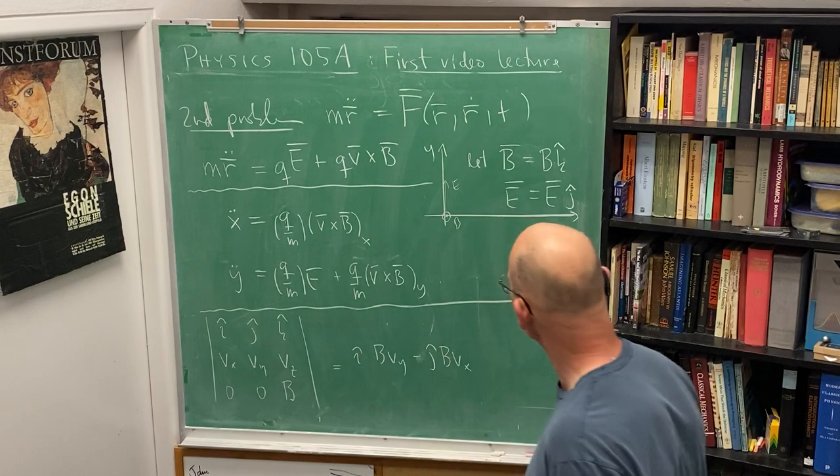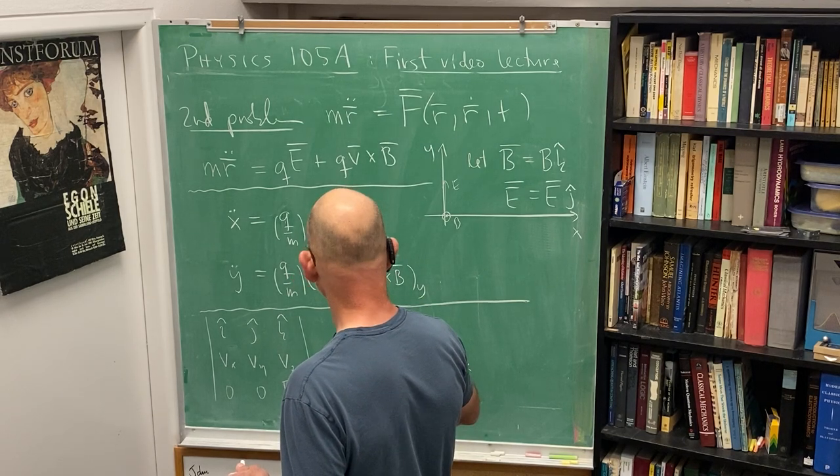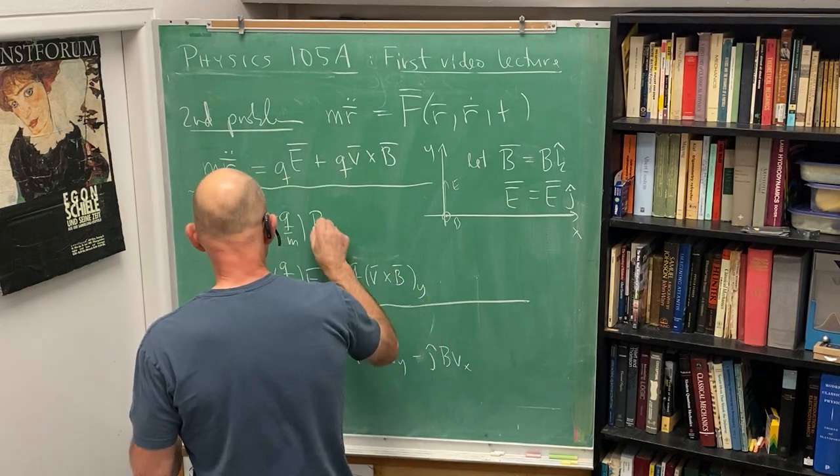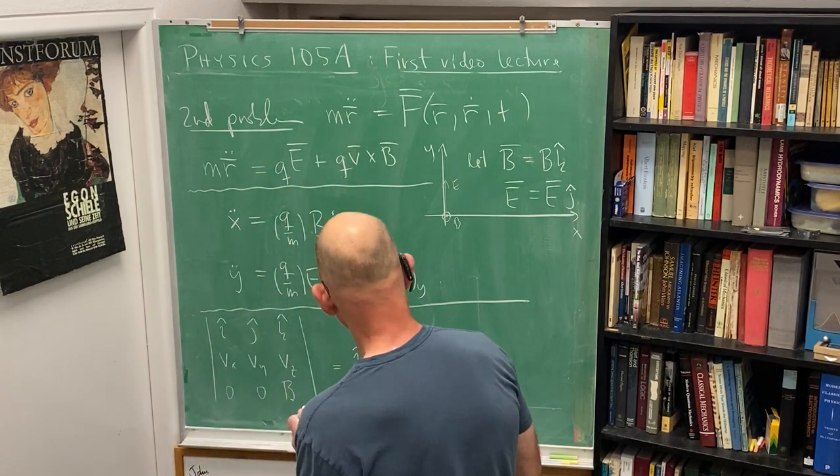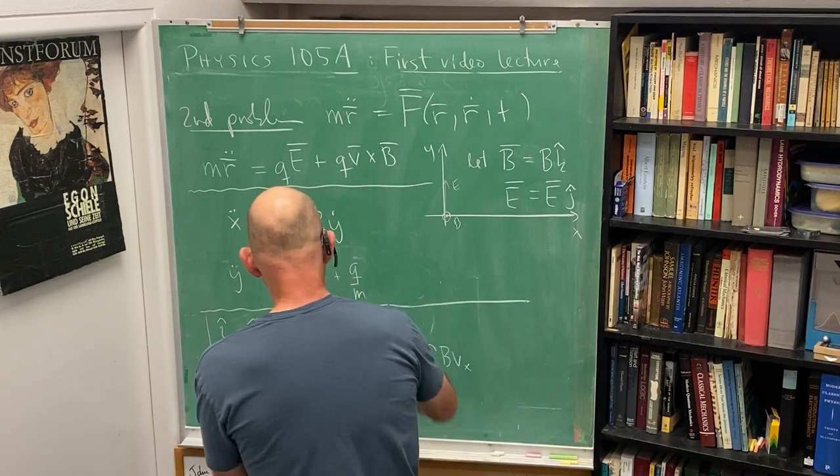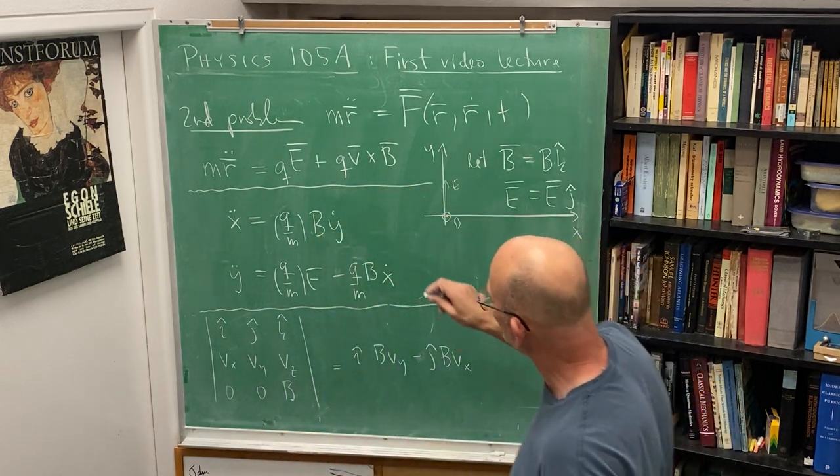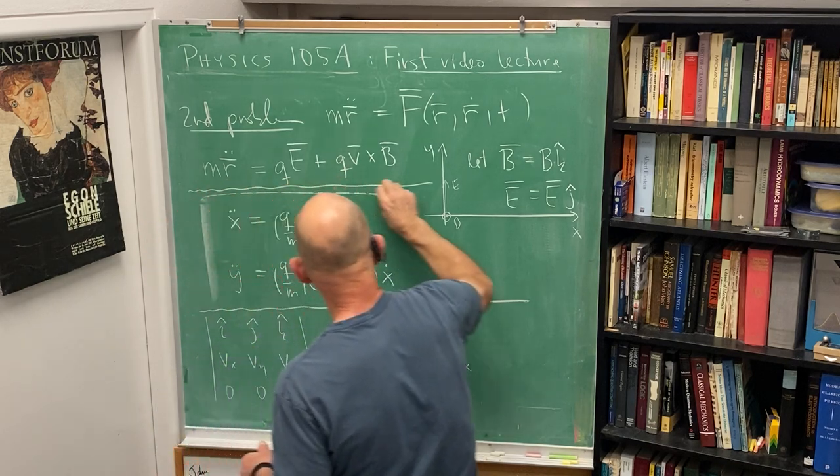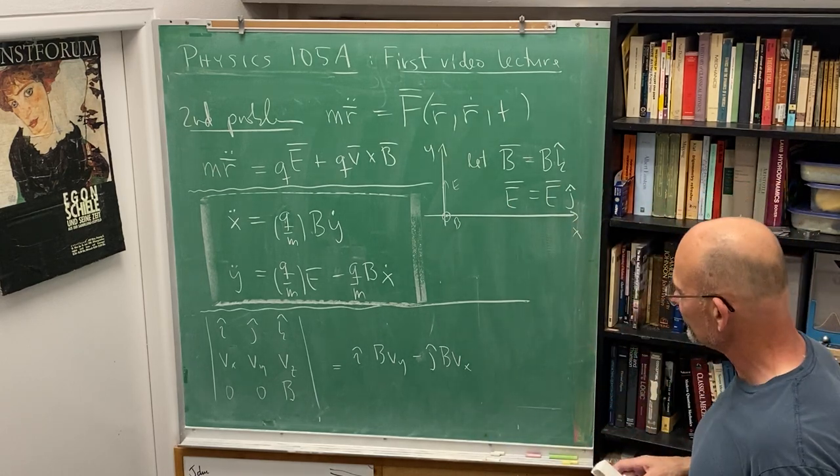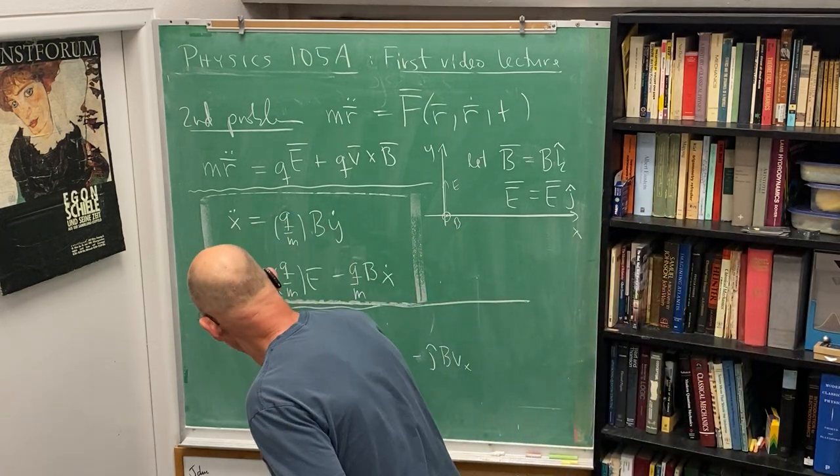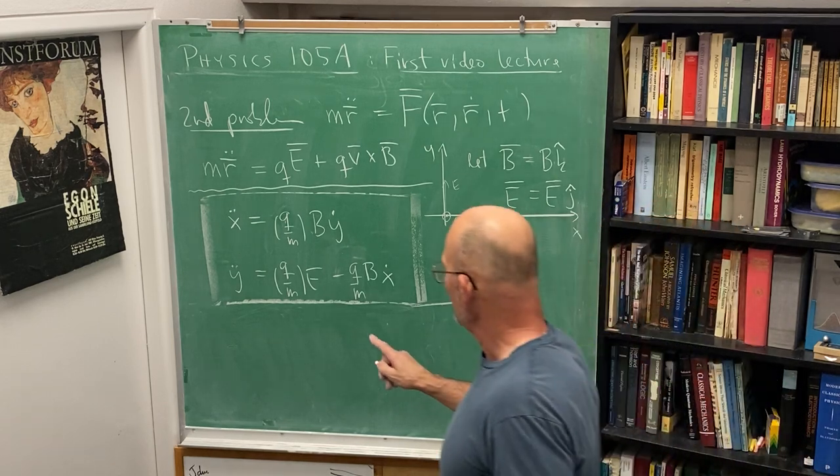Let's keep this and erase these here. So here I have q over m times B times y dot. And here I have q over m times E minus B times x dot. So there's a couple linear differential equations. So the solution of these is going to be fun. It'll be enough for me to write them down and give a couple of tips. Write them down, give a couple of tips.